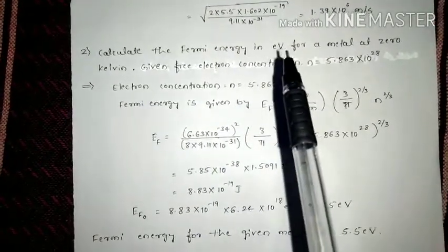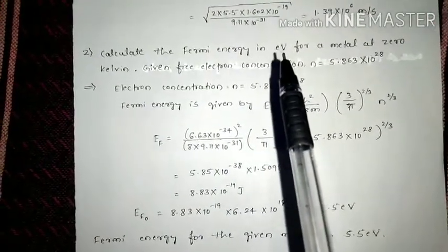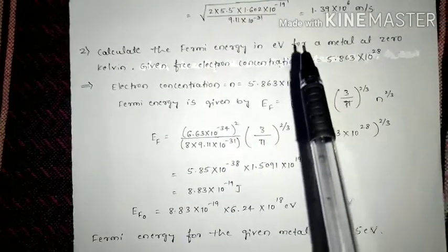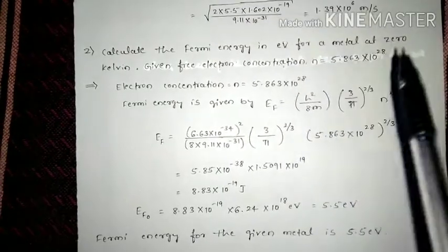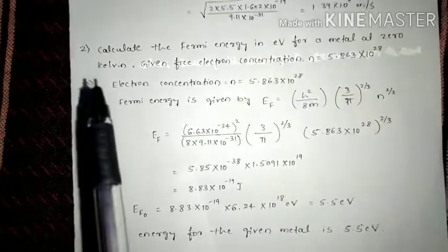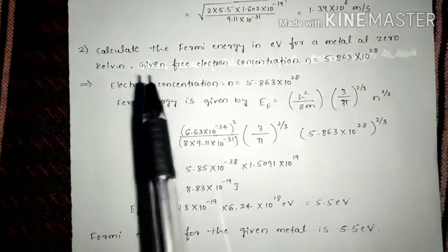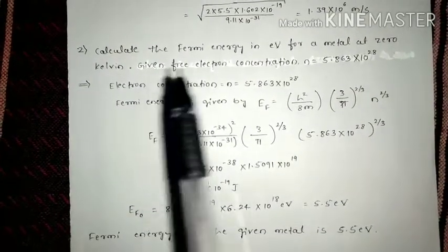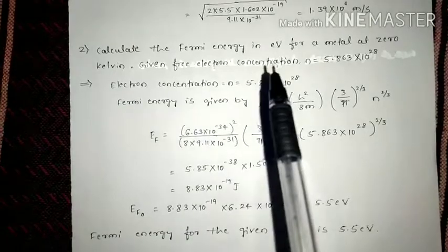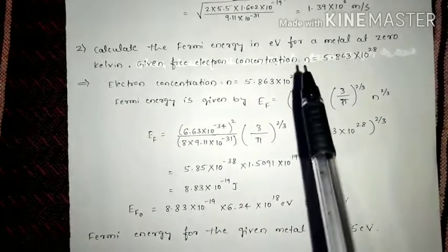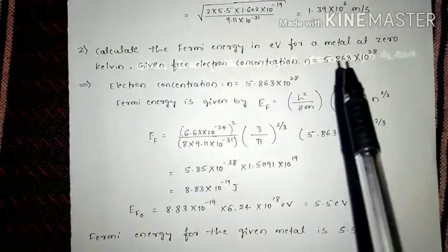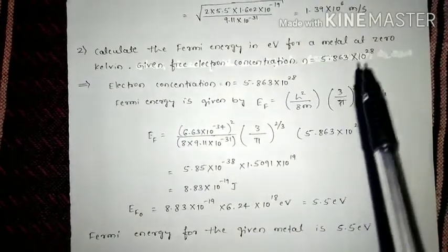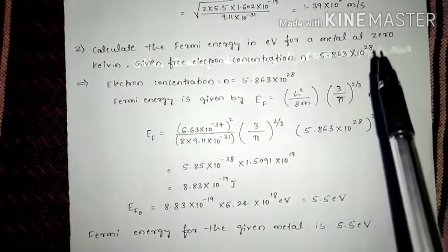The second problem: calculate the Fermi energy in terms of eV for a metal at 0 Kelvin, given electron concentration N = 5.863 × 10²⁸.